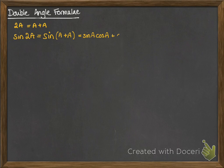So this one is a plus a, and if we work that through, we get sin(a)cos(a) plus cos(a)sin(a), which of course is 2sin(a)cos(a).